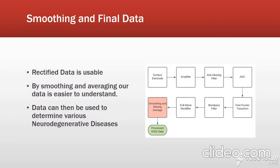After rectification, the data is usable, but it is better to both smooth and average our data to make it easier to understand. This data can then be analyzed to determine various neurodegenerative diseases, such as Parkinson's or essential tremor.